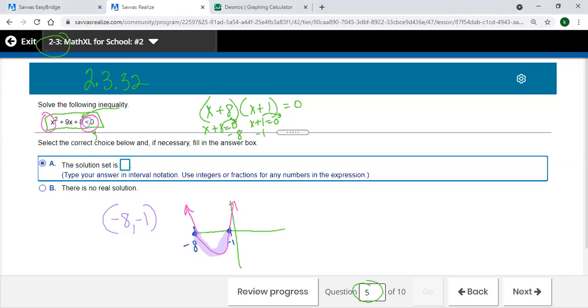So we're just going to put that in and we should be good to go. The negative eight up to negative one is where that parabola is negative or less than zero, below the X axis.